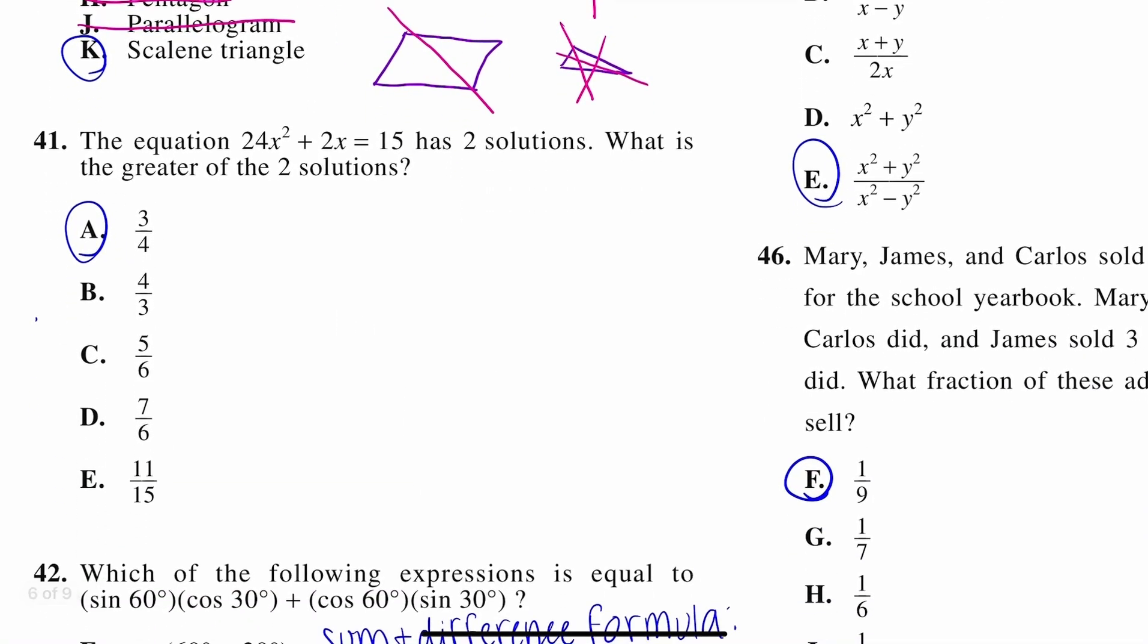Number 41. The equation 24x squared plus 2x equals 15 has two solutions. What is the greater of the two solutions? So what you're going to do is first get this whole equation equal to zero. So I need to move this 15 over to the other side. Since this is a positive 15, I'm going to subtract it. And it's going to leave me with a trinomial.